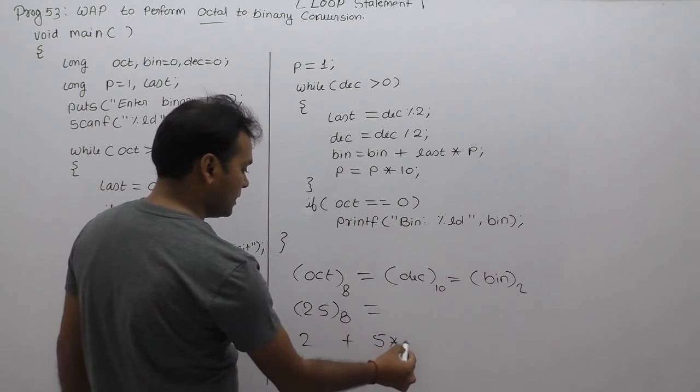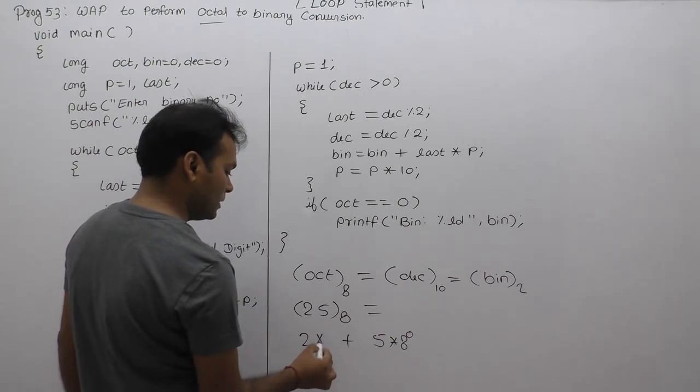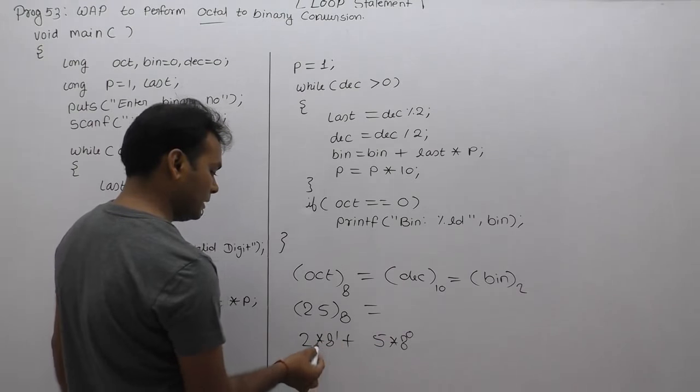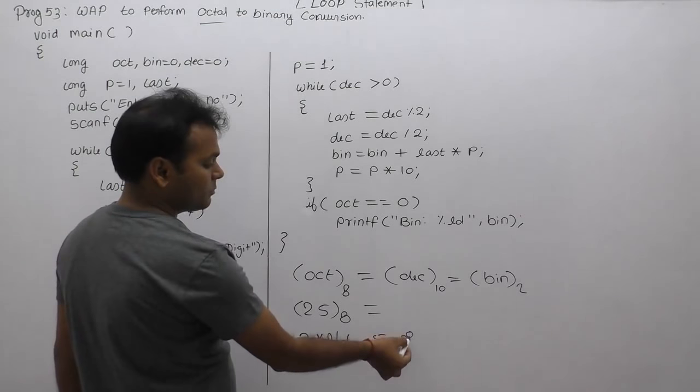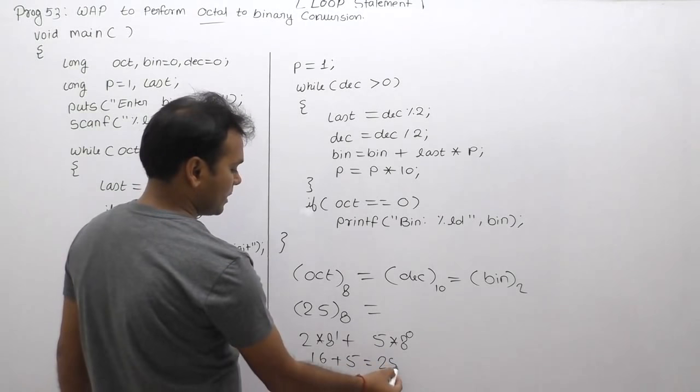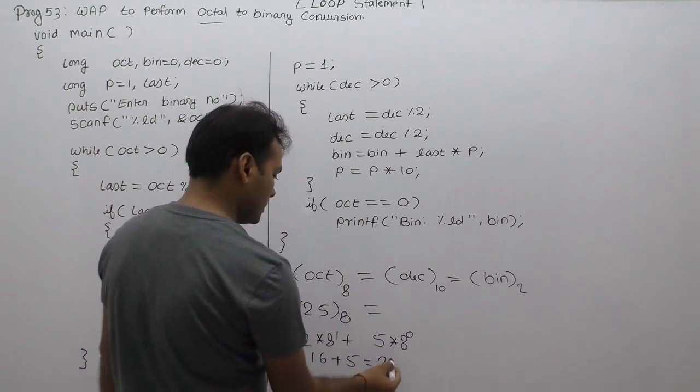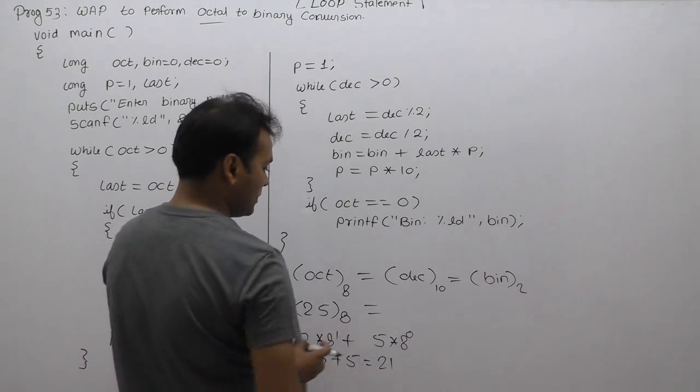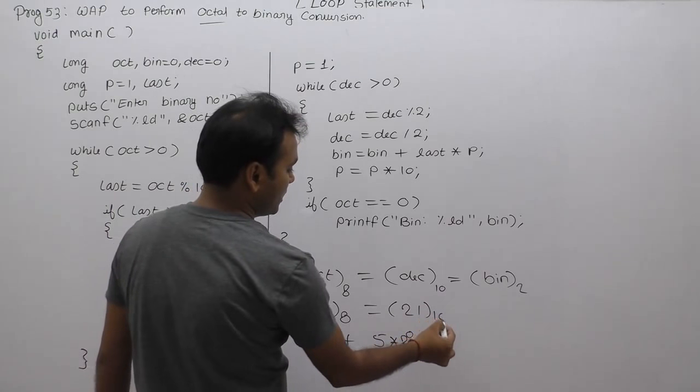Convert to base 10. Each digit multiplied by the given base available, base 8 to the power 0, multiply by 8 to the power 1. 8 multiply by 2 is 16 plus 8 to the power 0 is 1, 1 multiply by 5 is 5. In this case, 25 number is 21, equivalent decimal value.